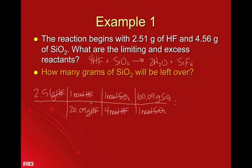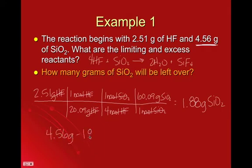And then plug this into the calculator, 2.51 times 60.09 divided by basically 80, 20.09 times 4. And I get 1.88 grams SiO2. Well, the question is, how many grams are left over? If I started with 4.56 grams and I used up 1.88, to figure out what's left over, you just simply subtract. And you get 2.68.